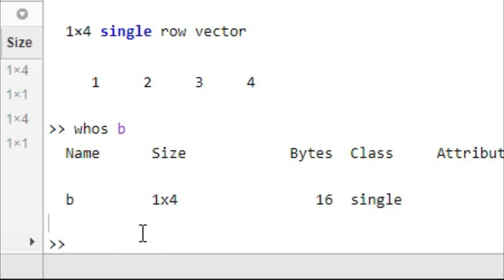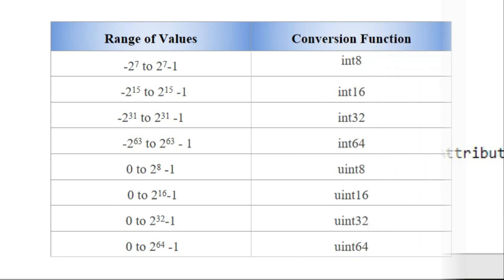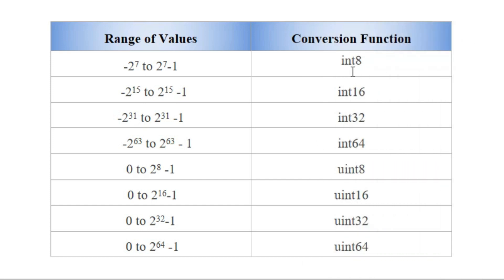Now let's work on integer types. We have int8 (1 byte), int16, int32, int64, uint8, uint16, uint32, and uint64. These data types work in a specific range of values: for int8 it is minus 2^7 to 2^7 minus 1. Like this, all integer data types work within their respective ranges.